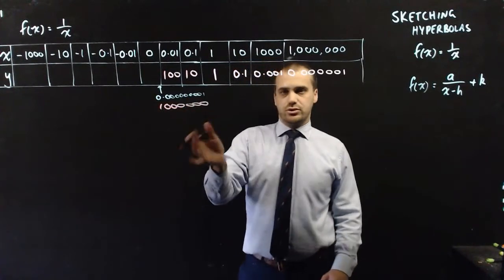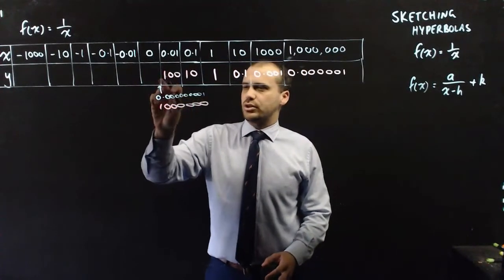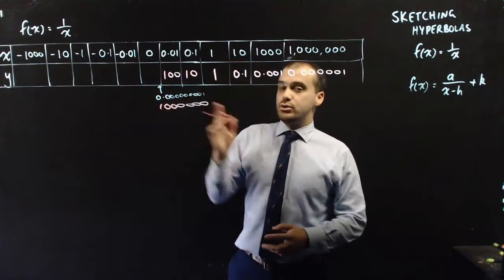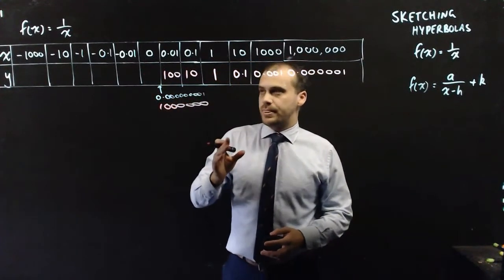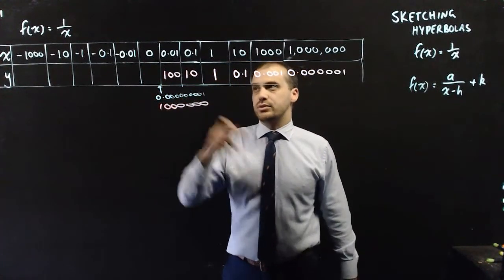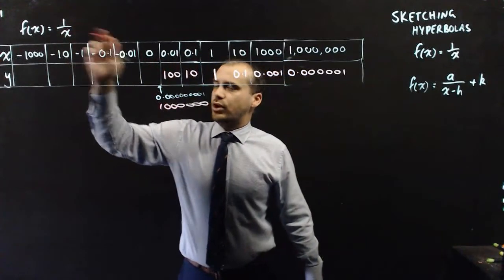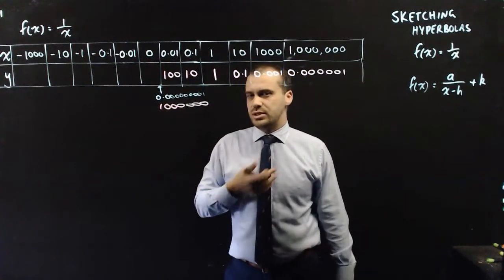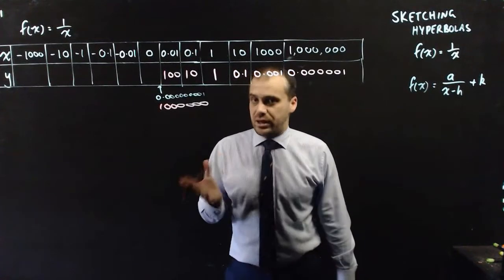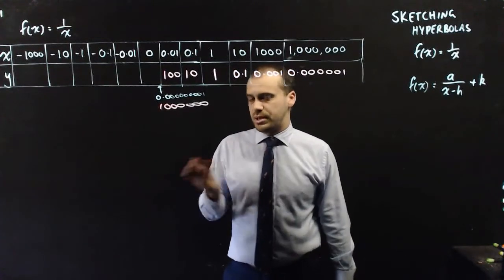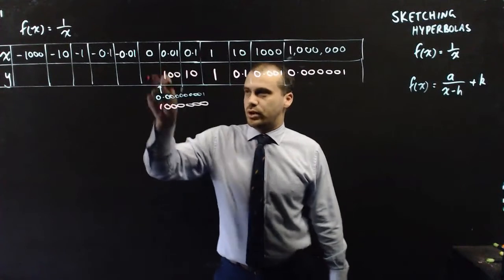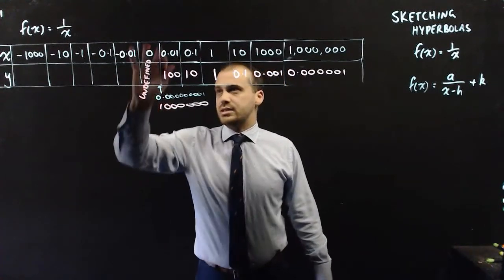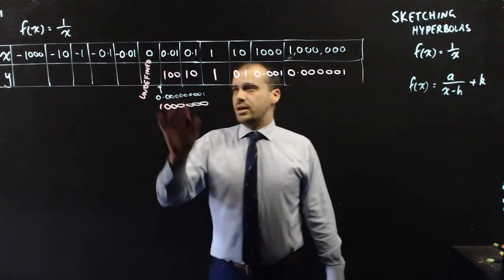As we get closer and closer to 0, we're getting a really huge number. What happens if we do 0? 1 divided by 0 — if you type that into your calculator, you're going to get math error or undefined depending on your calculator. It just doesn't work. The special word we get here is undefined.